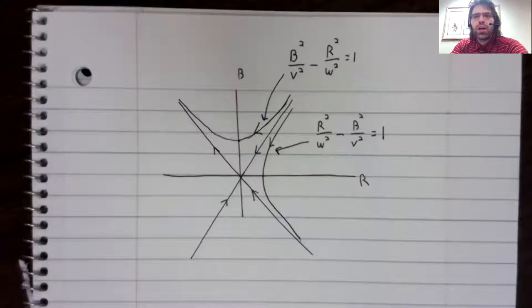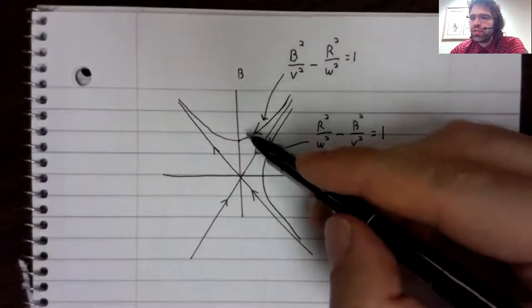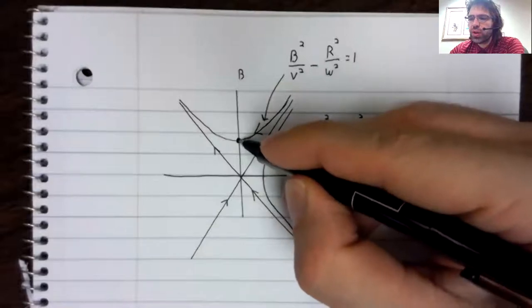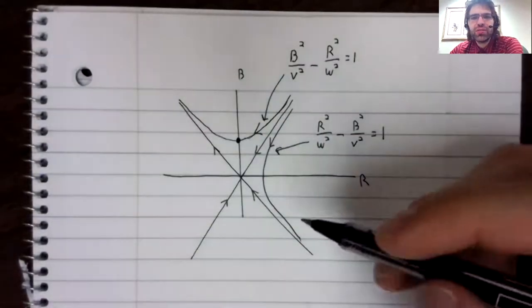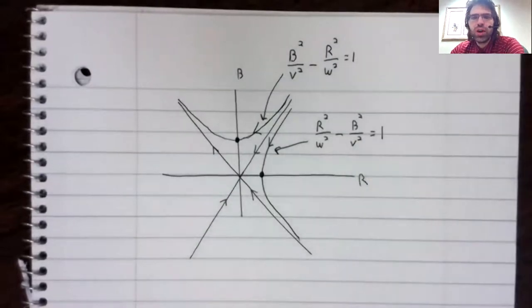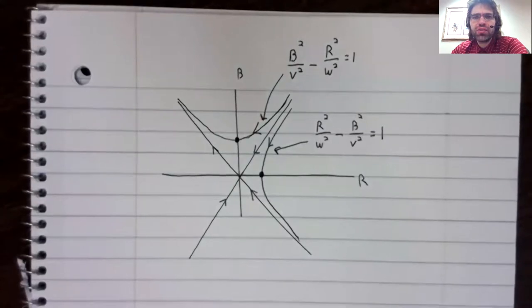They are, in particular, hyperbola in their standard forms. This hyperbola has a vertex on the B axis. This hyperbola has a vertex on the R axis.